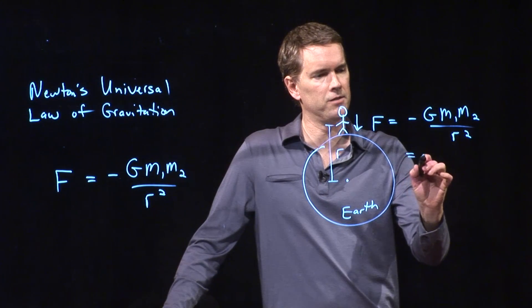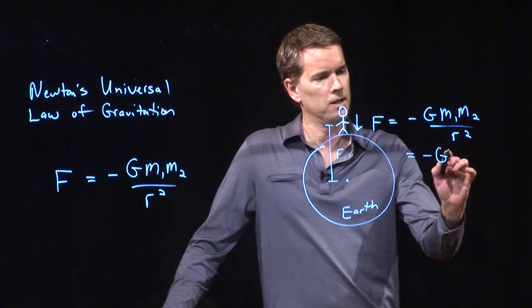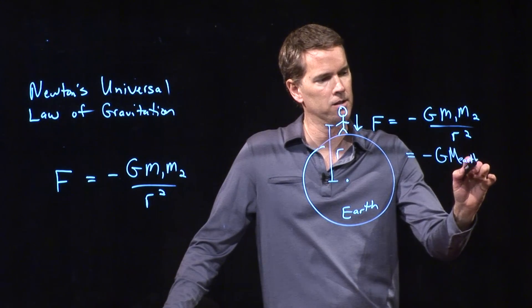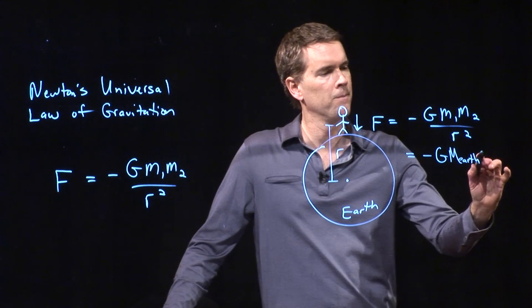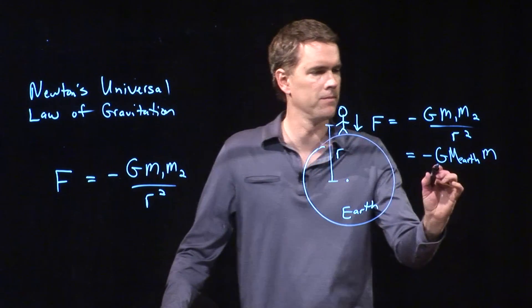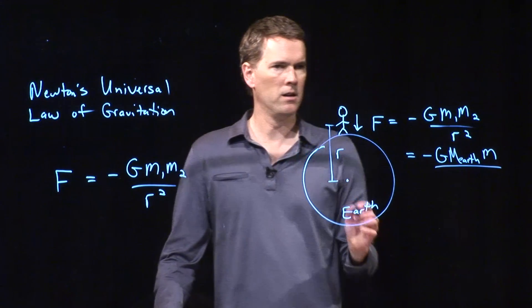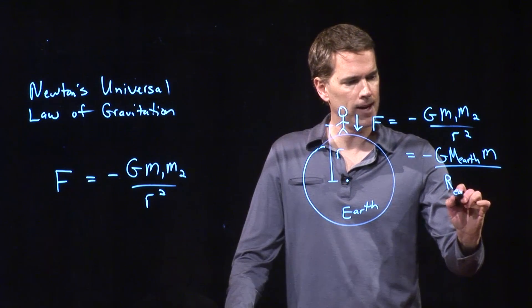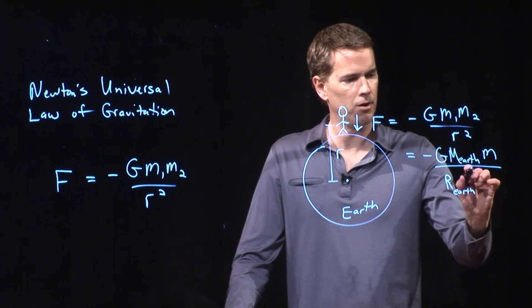And so what's the force? It's negative G times the mass of the first object, which is the Earth, times the mass of the second object, which is me, divided by r squared, where r is the radius of the Earth.